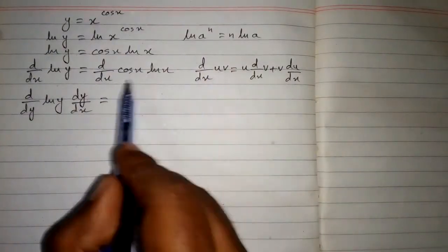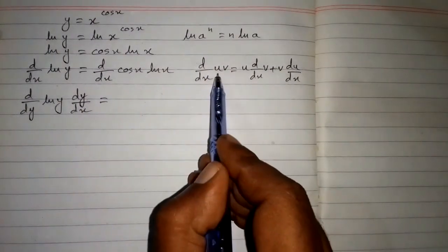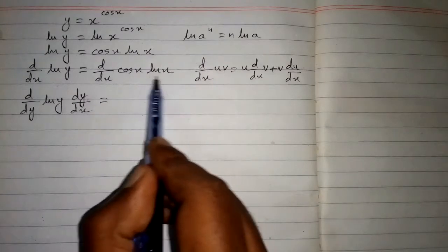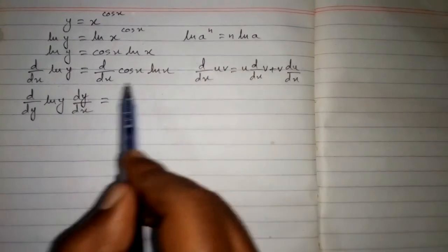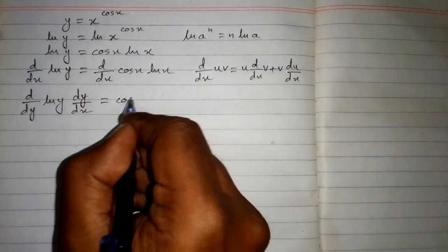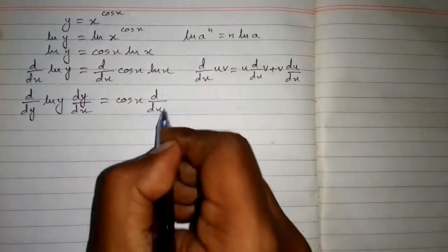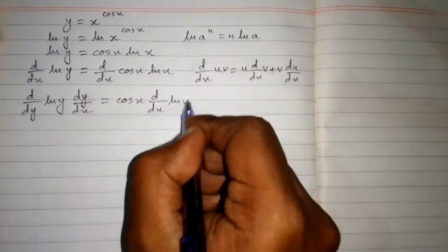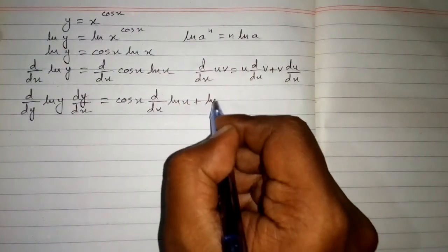Now here we can see that we have cos x in place of u and ln x in place of v. So we will apply this formula and we have cos x times d by dx of ln x plus ln x times d by dx of cos x.